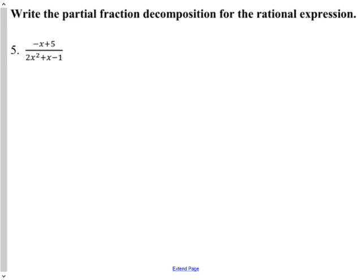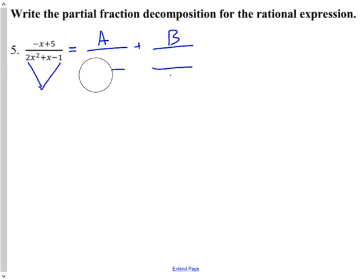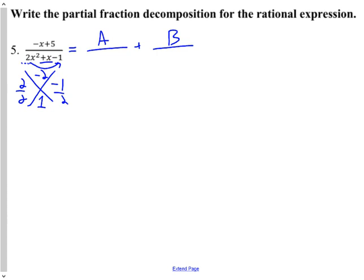Partial fraction decomposition is to rewrite a fraction as pieces of its original — A over one part of its denominator equals B over the other part of its denominator. To know what it breaks into, we have to factor the denominator. Factoring 2x squared plus x minus 1: we multiply and get minus 2, so numbers that multiply to equal minus 2 and add to equal 1 are 2 and minus 1. Using slide-divide, we get x plus 1 as one factor and 2x minus 1 as the other.